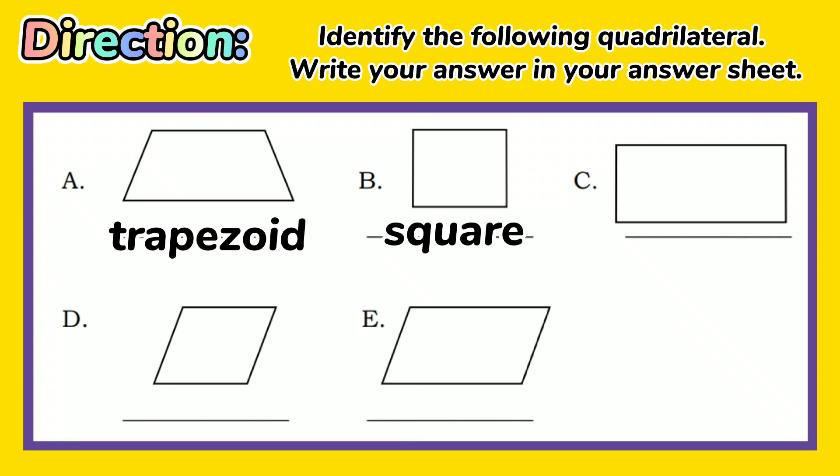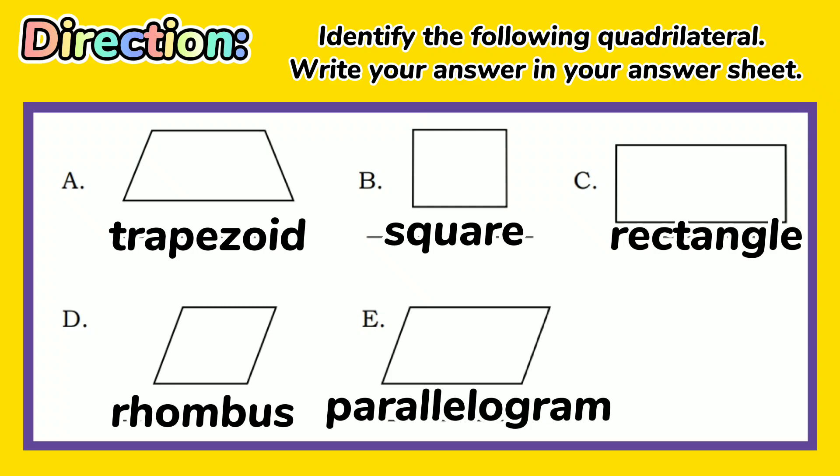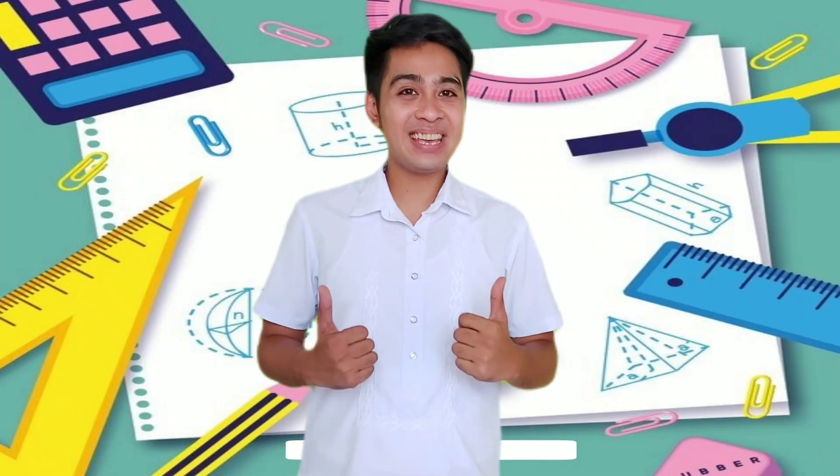B is a square. Good job. C is a rectangle. D is a rhombus. And letter E is a parallelogram. Good job, kids!